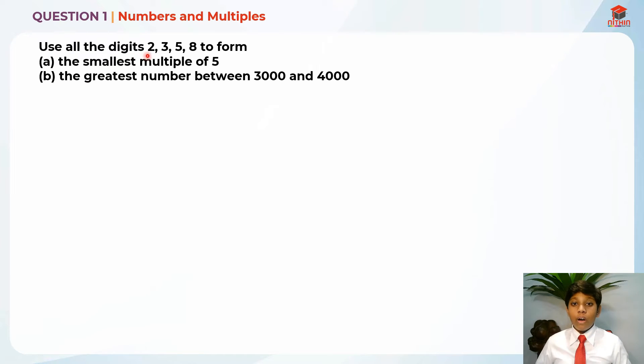So let's read the question for part A first. Use all the digits 2, 3, 5, 8 to form part A, the smallest multiple of 5.